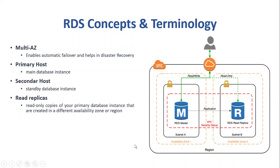Now the read replica — how is it different from the secondary host? A read replica is a read-only copy of the primary database created in a different availability zone of the same region. The purpose of read replica is to improve read scalability and performance by offloading read requests from the primary database. The key difference is that read replicas cannot be used for failover or recovery purposes.